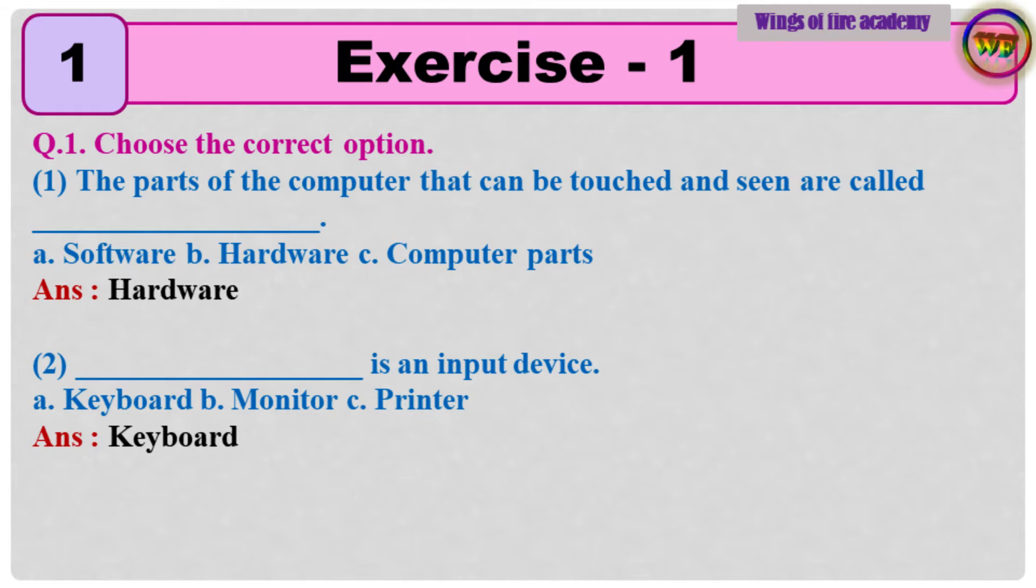Question number 1, choose the correct option. 1. The parts of the computer that can be touched and seen are called A. Software B. Hardware C. Computer parts. Answer Hardware. 2. Is an input device A. Keyboard B. Monitor C. A printer. Answer Keyboard.